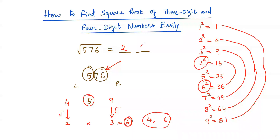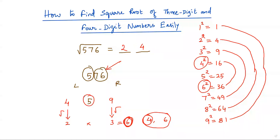Now multiply the square roots of the two surrounding perfect squares — that is, 2 × 3 = 6. Compare this product 6 with the number in the first group, 5. Since 6 is greater than 5, we take the smaller of the two candidates, which is 4. So 24 is the square root of 576. If the product were less than the first-group number, we would take the larger candidate.